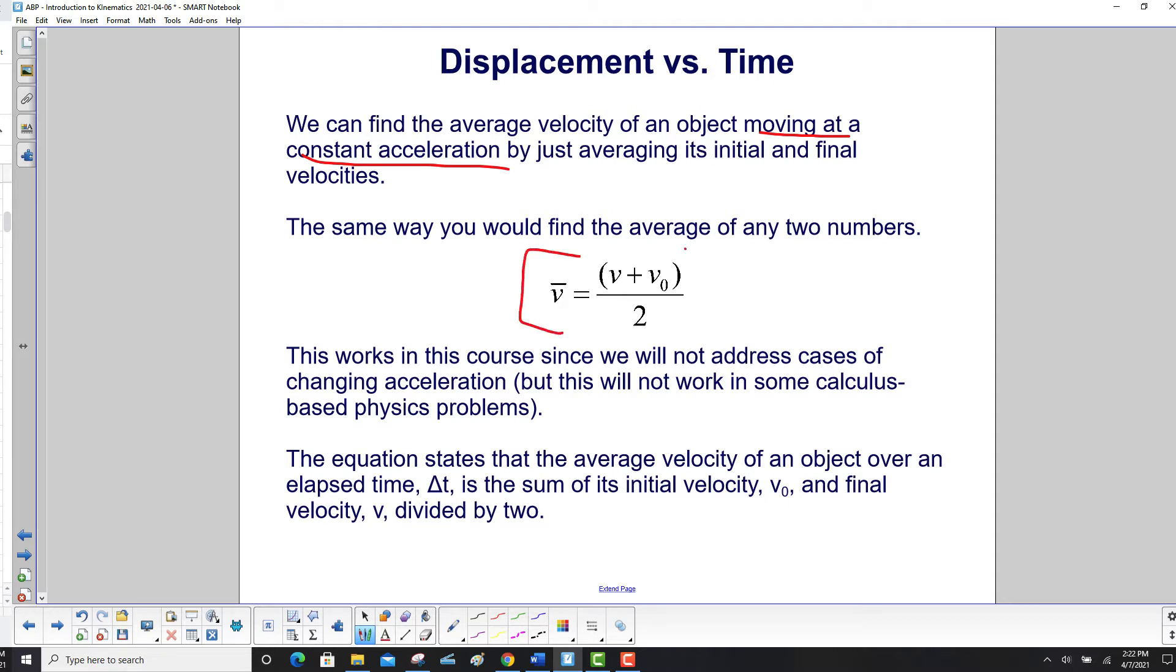That's the same way you would find the average of any two numbers. So average velocity is v plus v₀ over 2. And that will work in this course, since we will not address cases of changing acceleration. However, this will not work in some calculus-based physics problems where you do have changing acceleration.